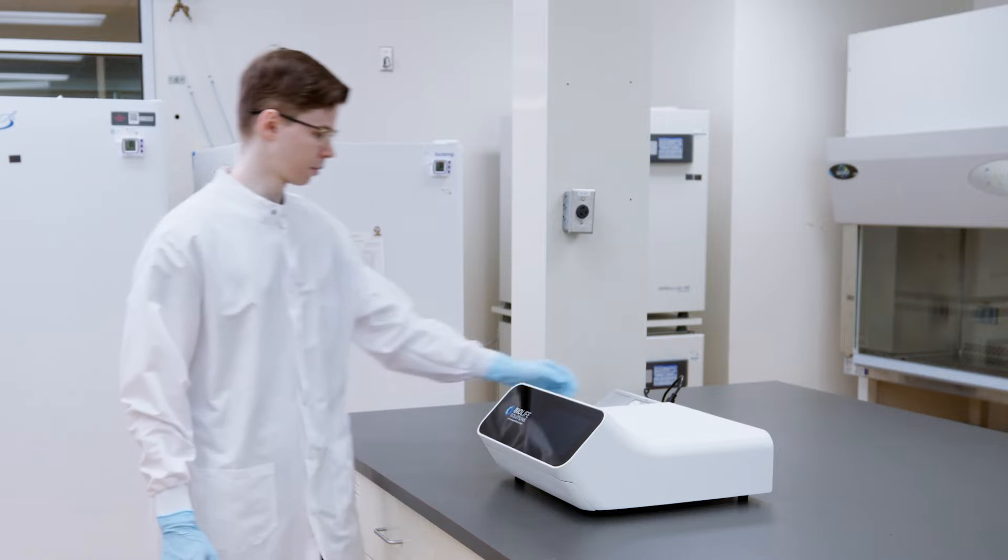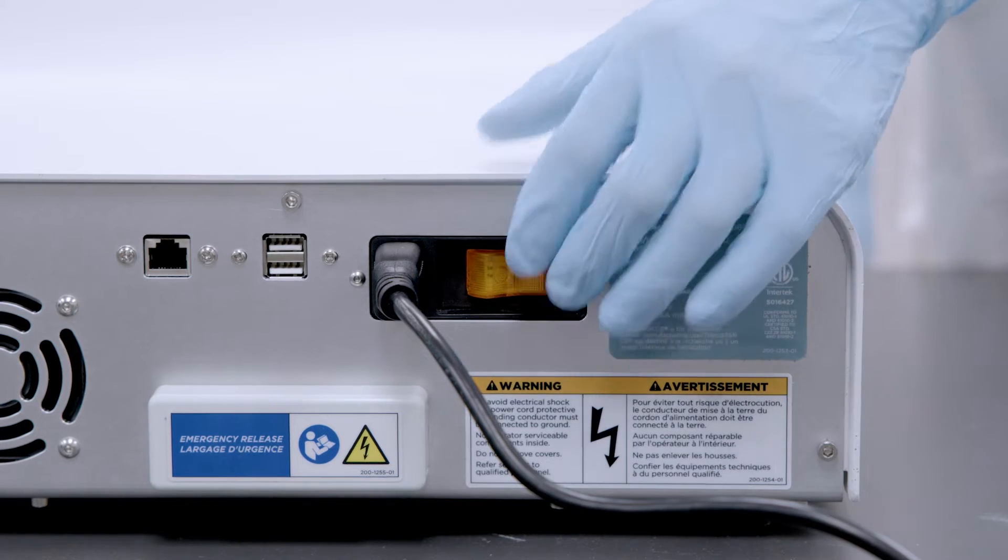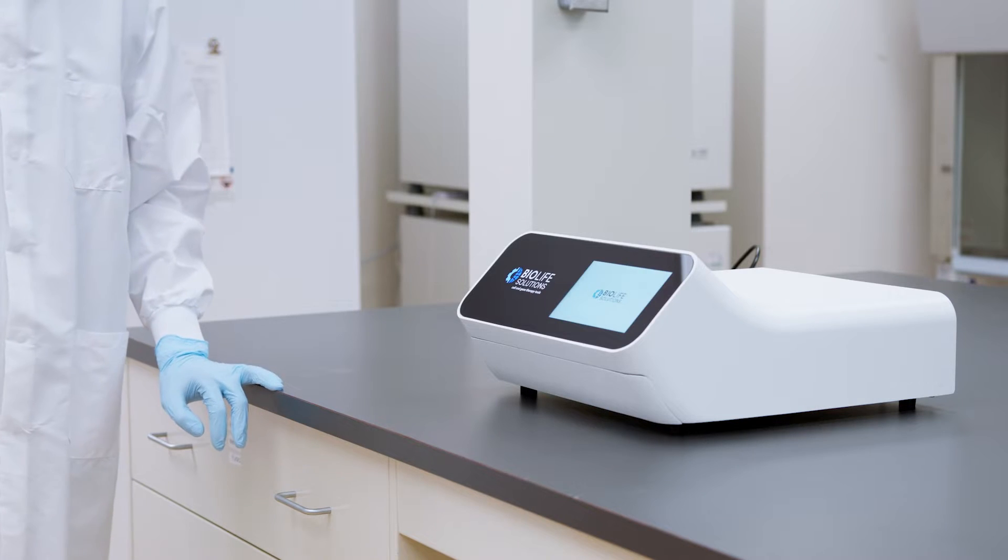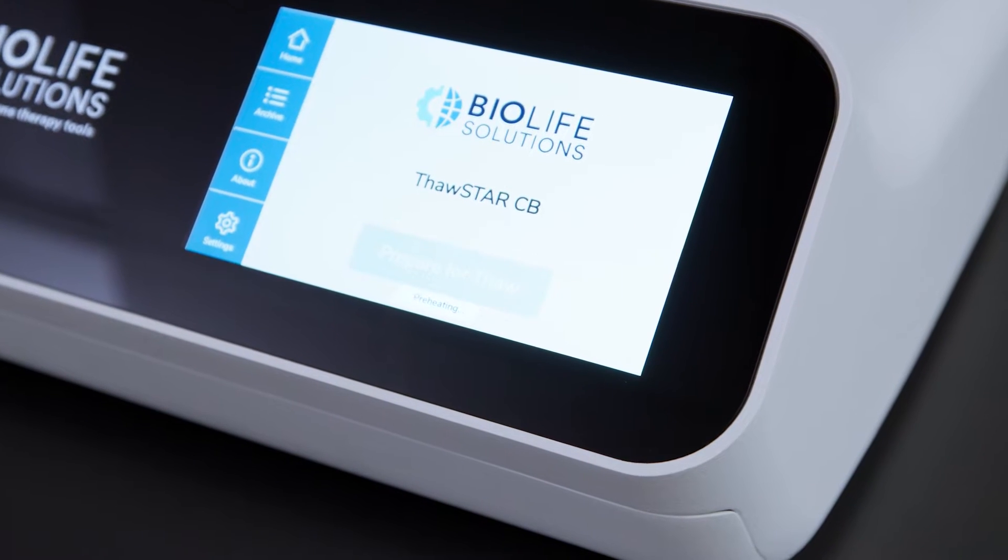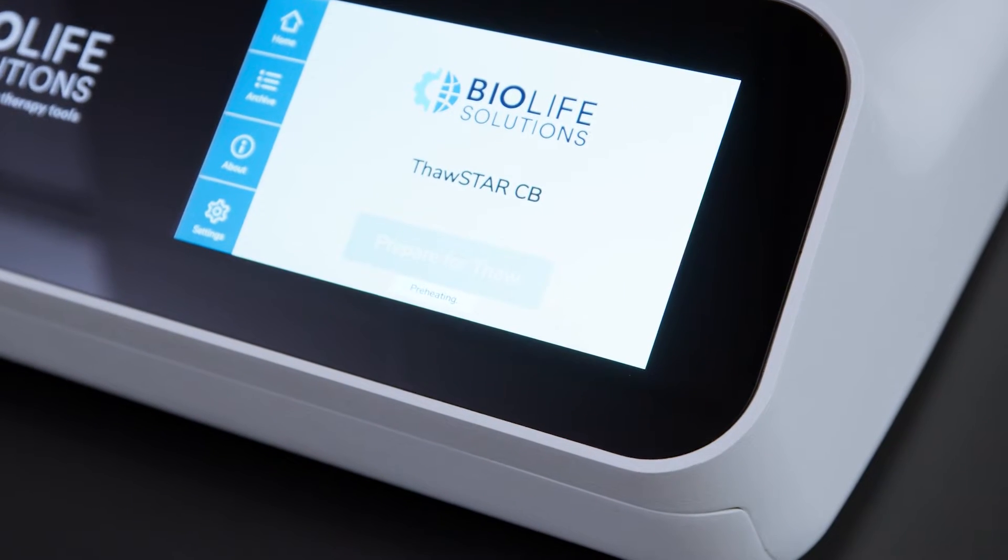To start, turn on the Thawstar CB and wait until it completes the preheating sequence. The system will be inoperable during preheating. An on-screen indicator will notify you that preheating is in progress.